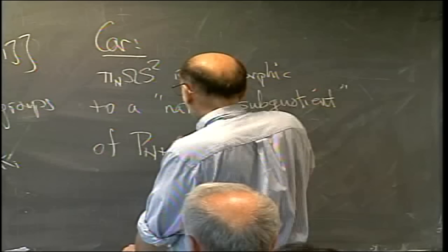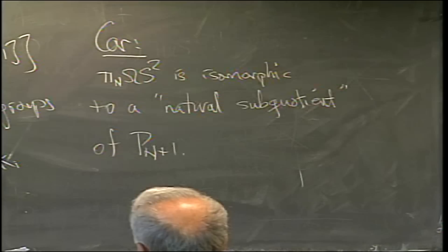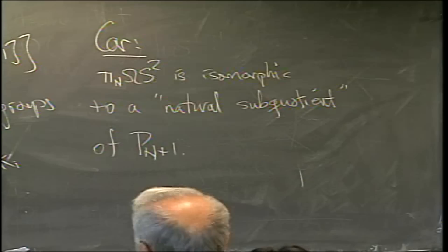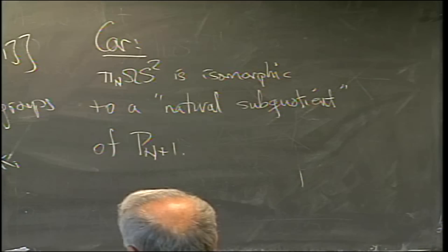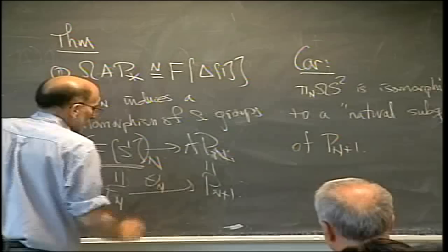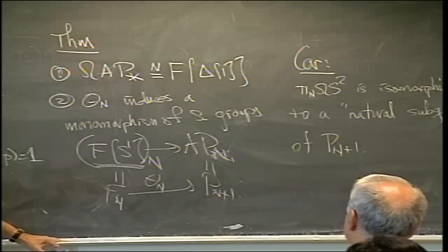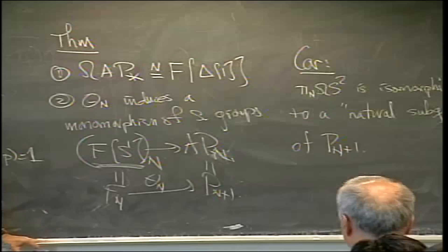A corollary is that the nth homotopy group of the loop space of the two-sphere is isomorphic to a natural subquotient of P_{n+1}. I should caution you: the homotopy groups of the loop space of the two-sphere are not known. Quite a bit is known about them, but those groups are not known and they're rather complicated combinatorially. In fact, if you look at this in degree n, this is P_{n+1}, this is a free group on n letters, and the theorem is that this is theta_N. When you look at the simplicial group gotten from the pure braid groups, the smallest simplicial subgroup containing the two-stranded twist - the generator for P_2 - is the loop space of the two-sphere in this context.